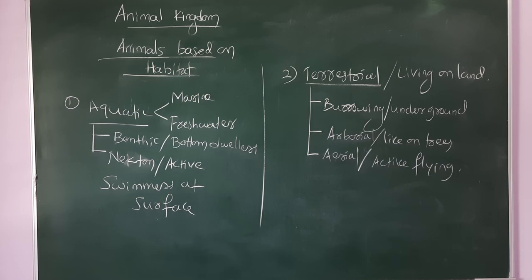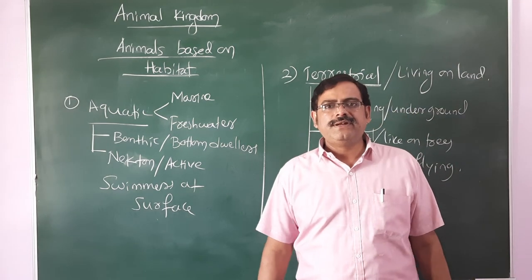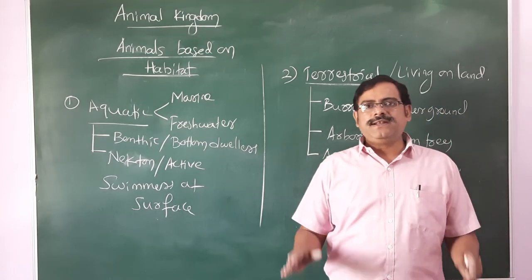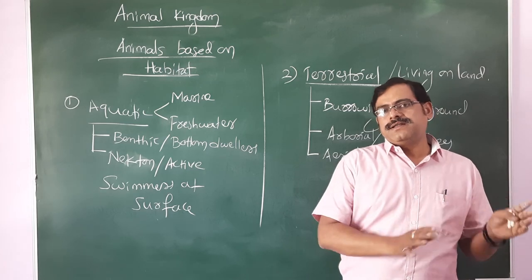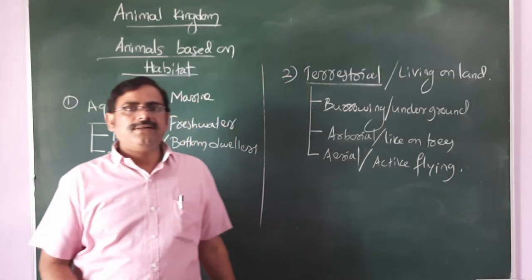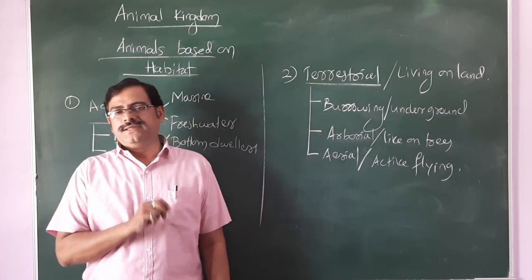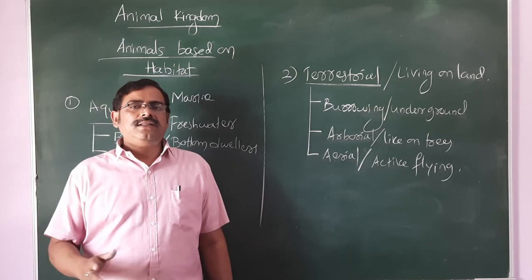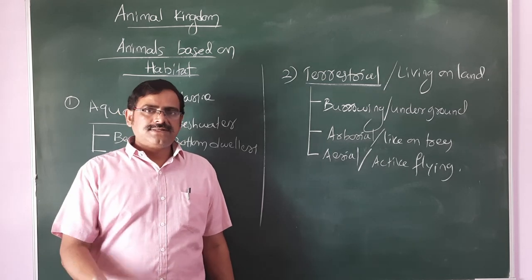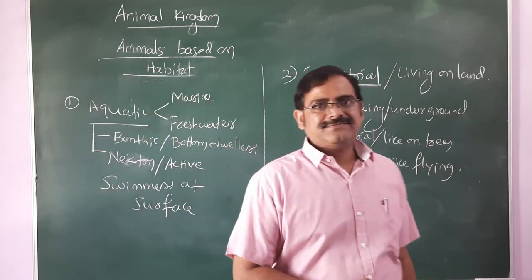Animals based on nutrition and the basis of classification — along with different groups of animals — will be discussed in the next class in much more detail. These are very interesting facts regarding the animal kingdom. Today we discussed the basic difference between animals and plants, basic characteristics of animals, and animals based on habitat. Animals based on nutrition and remaining points will be discussed in the next class. Take care and study well!